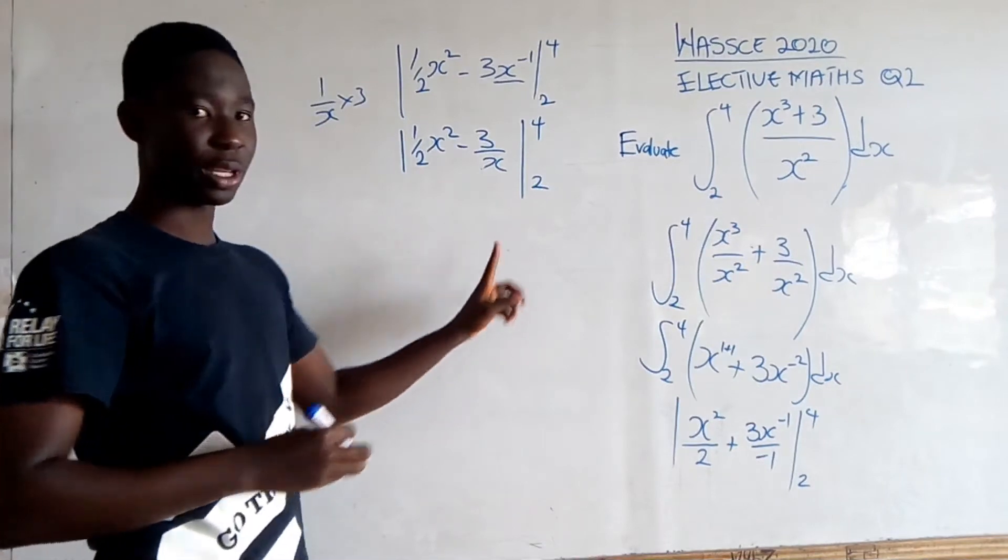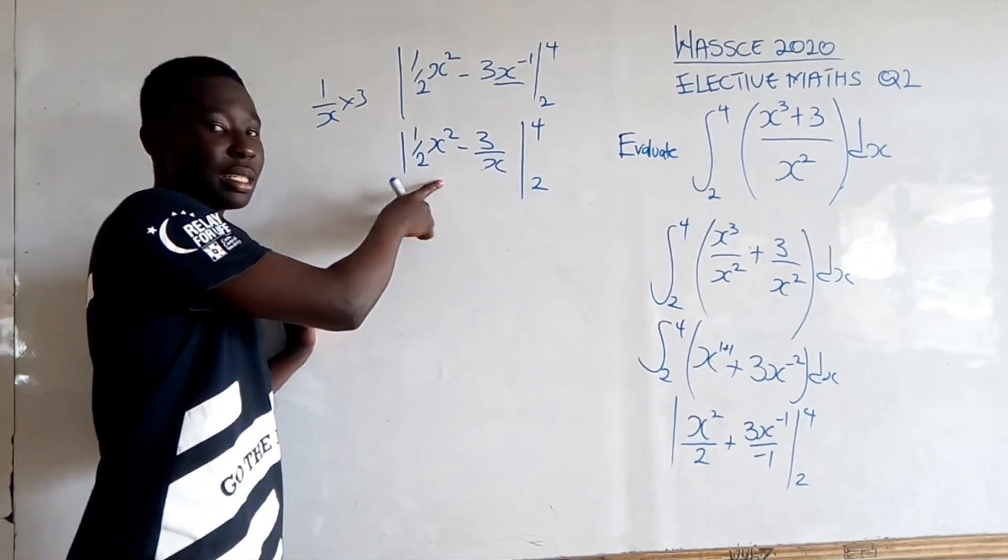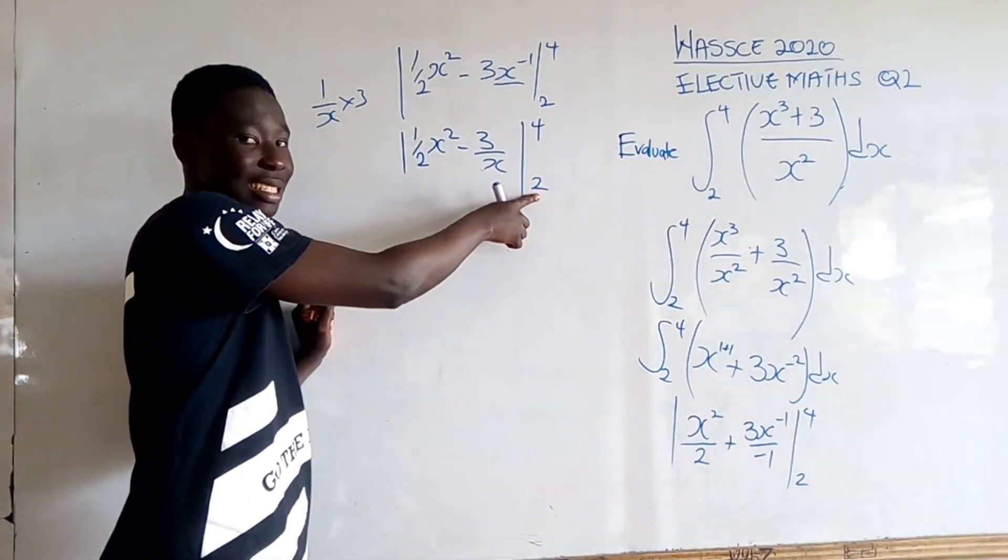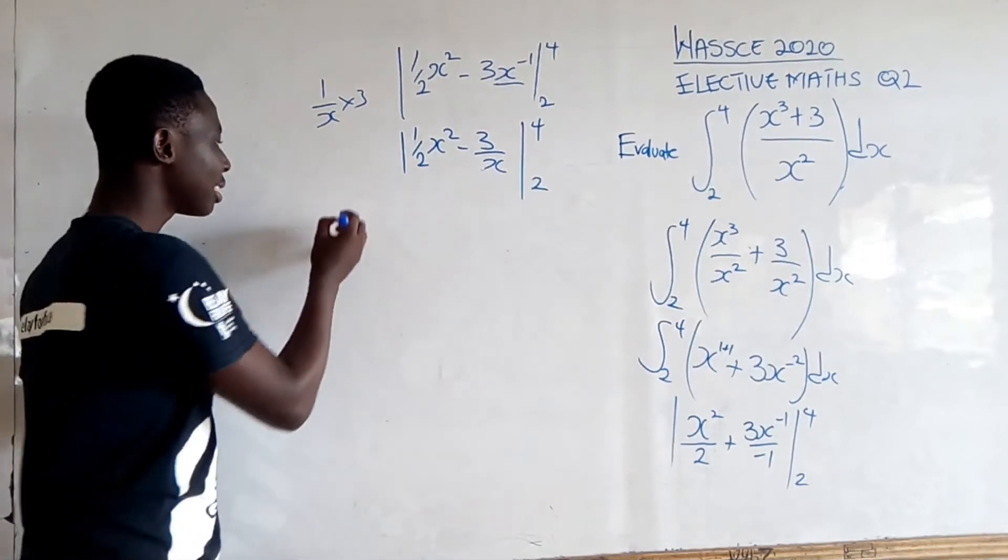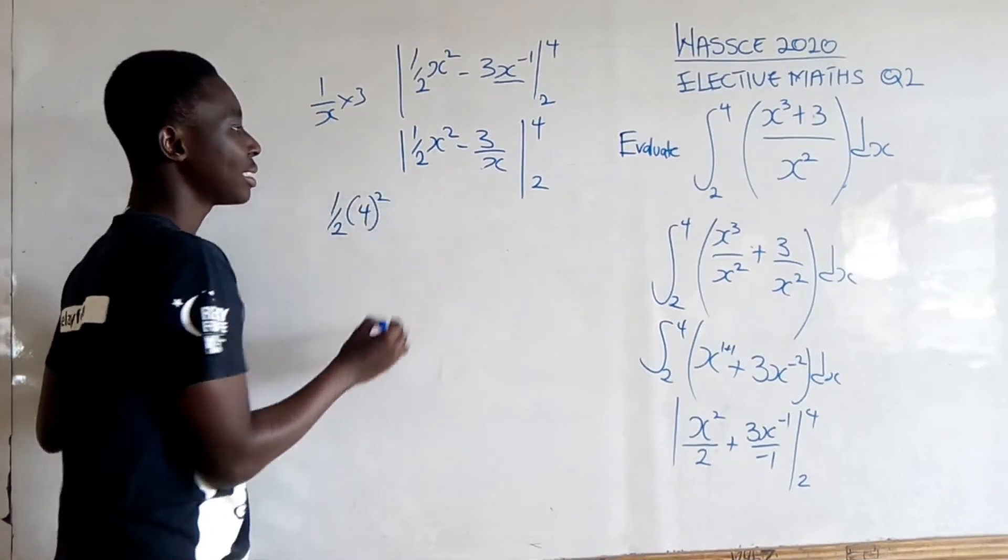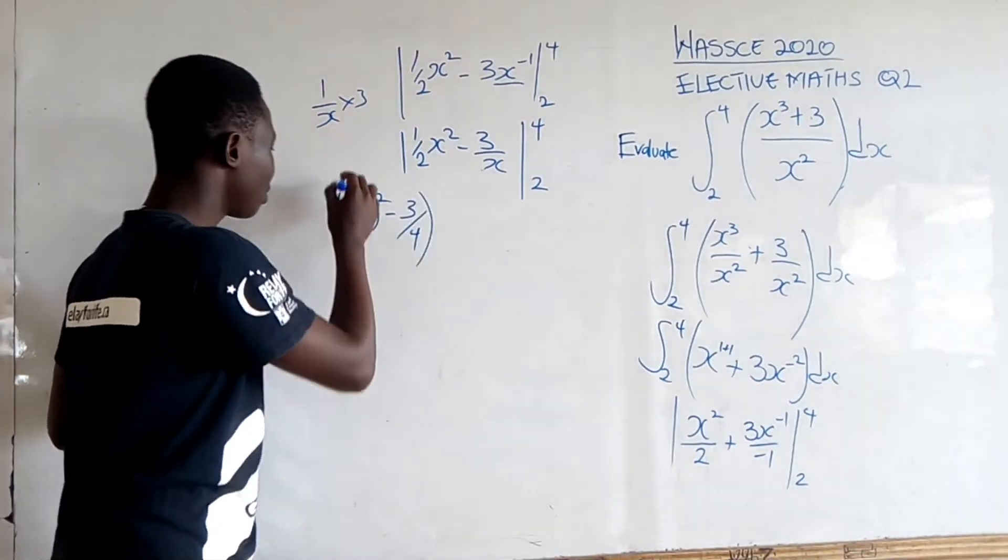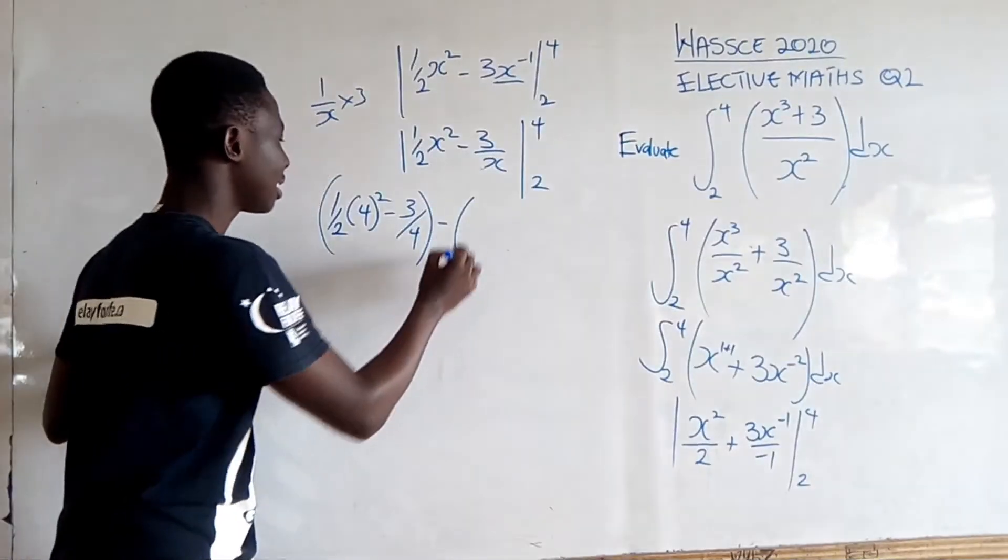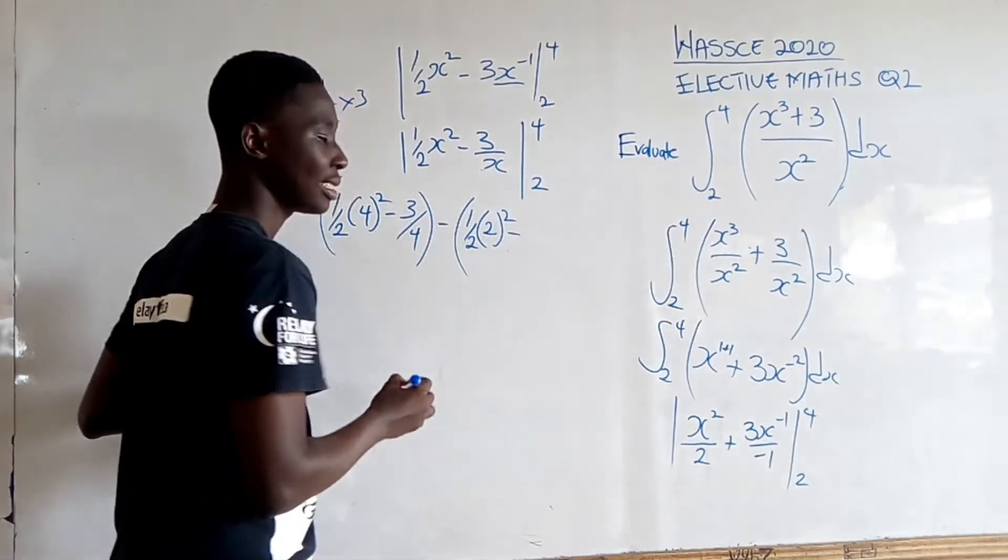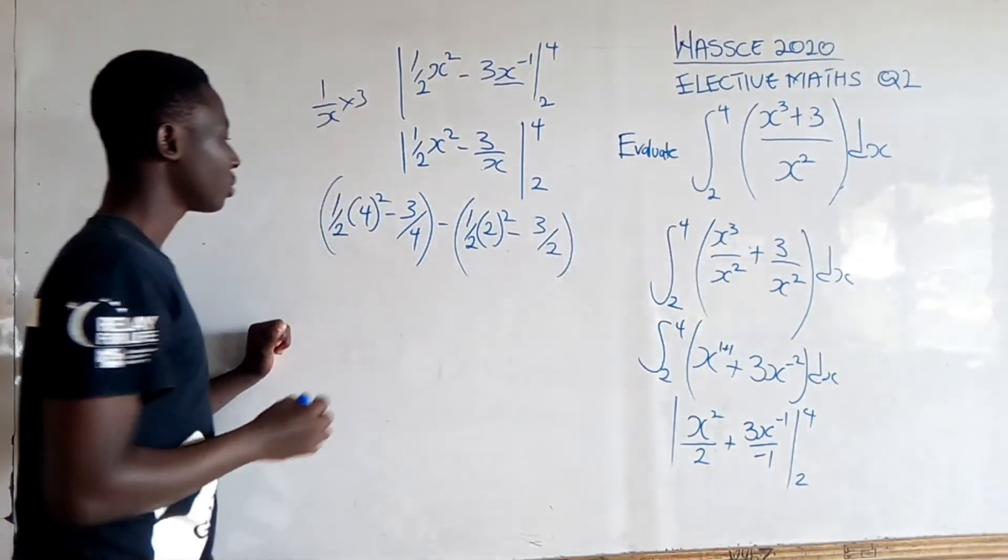Now, we are going to substitute the upper class, which is 4, into the expression minus the lower class. So we get (1/2)(4²) minus 3/4.